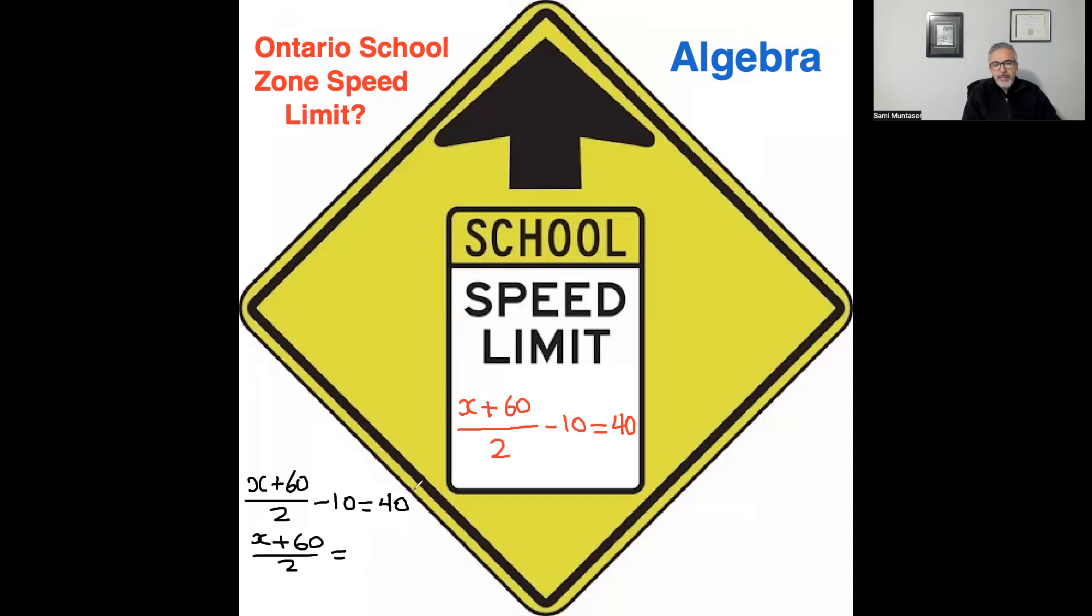when you move the negative 10 to the other side, it becomes plus 10, so 40 plus 10 will give you 50. Now we cross-multiply the 2 right here, so you get x plus 60, so 2 times 50 is 100.